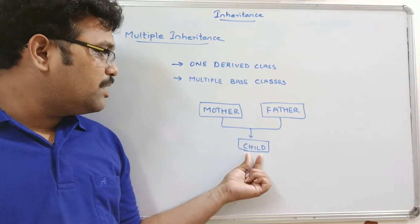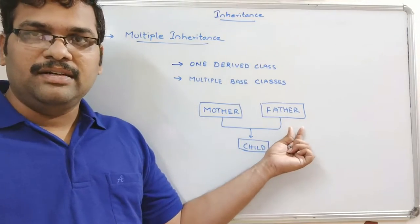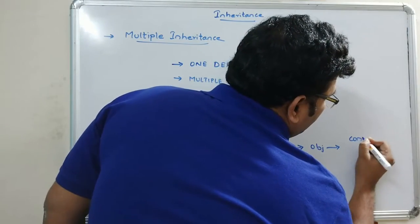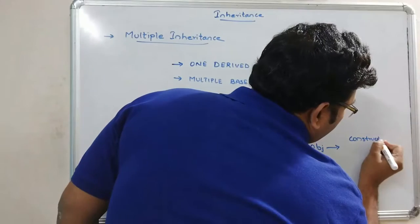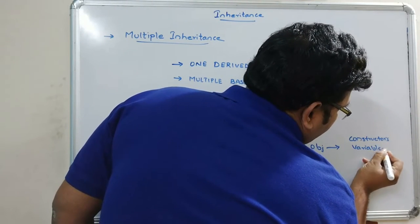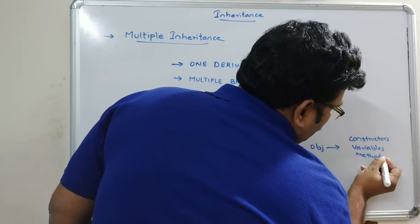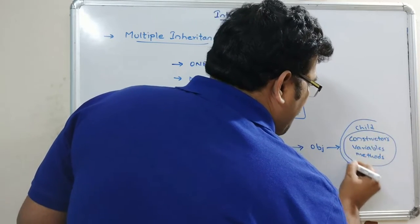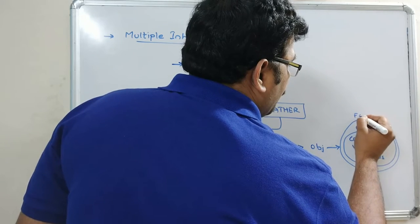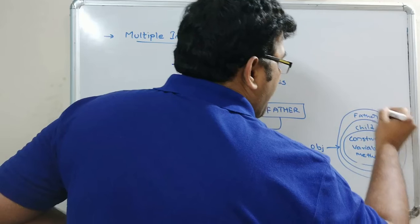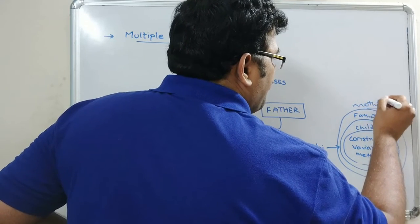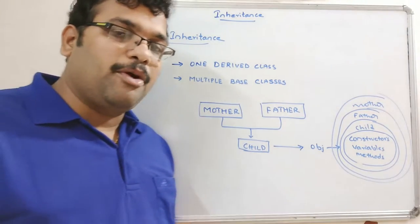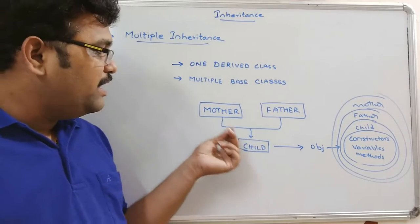In multiple inheritance, there are two different base classes and only one derived class. The child acquires the properties of both the mother class and the father class. By creating an object for the child class, it can access the constructors, variables, and methods of the child class, as well as the father class and the mother class.